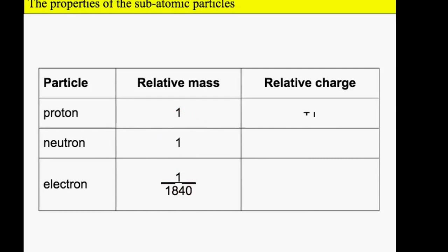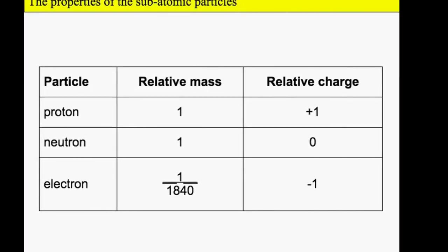If we look at charge, the proton has one positive charge, the neutron is neutral, and the electron has one negative charge.